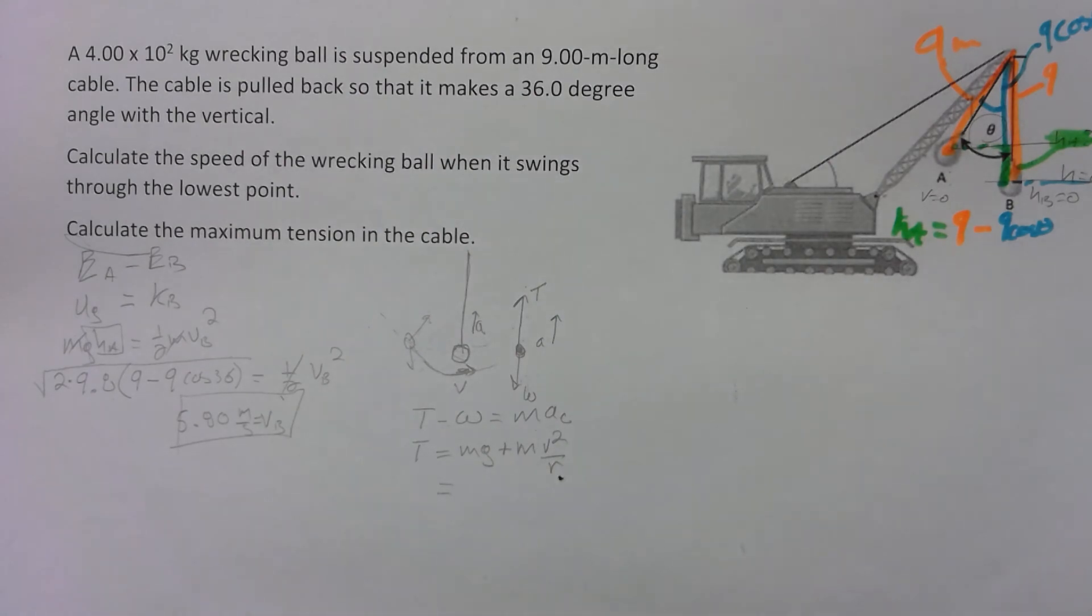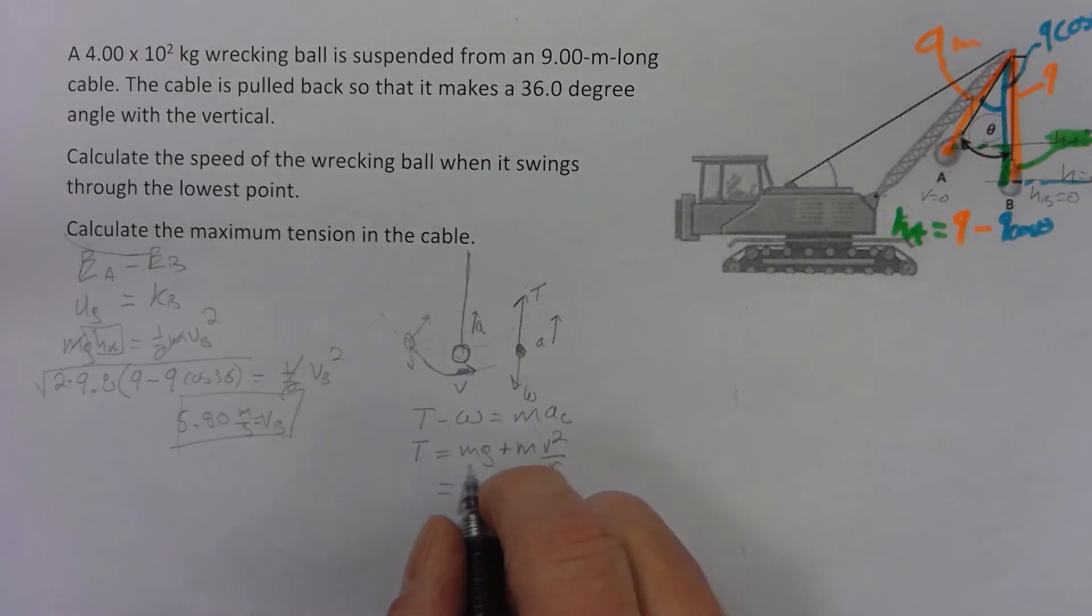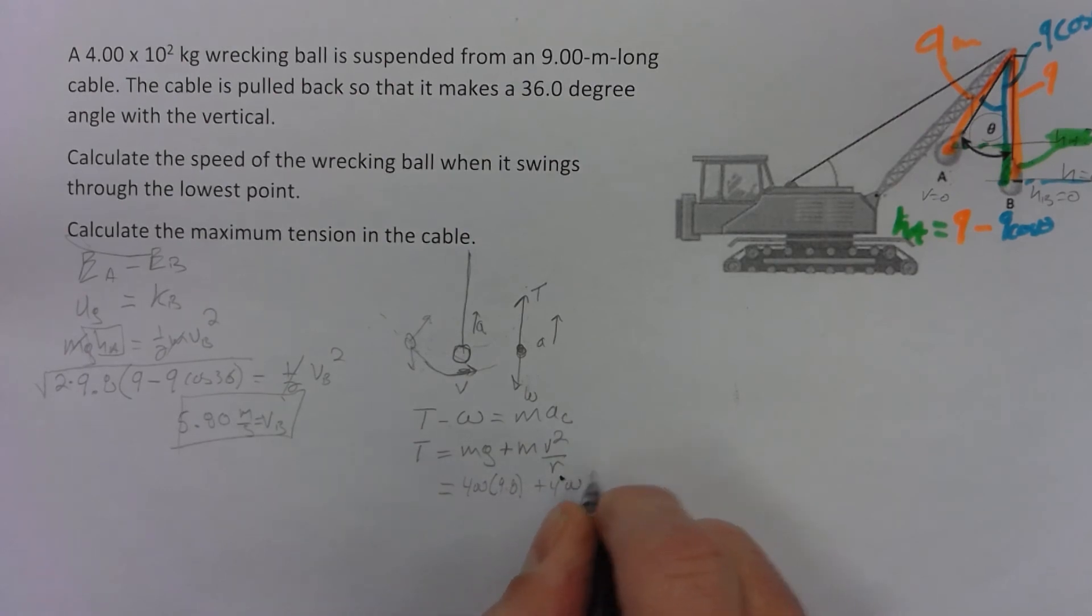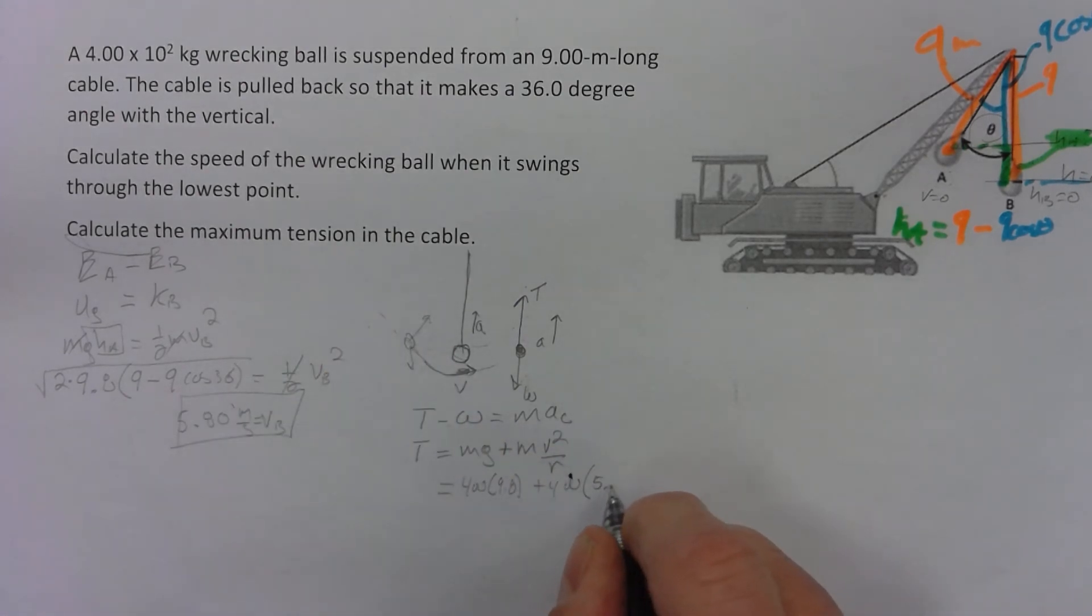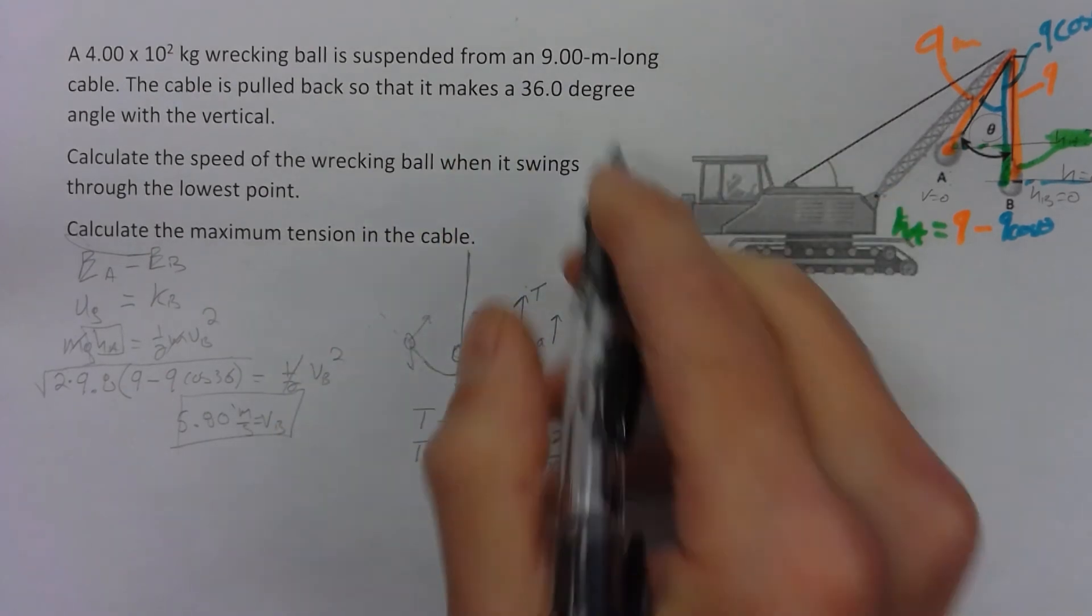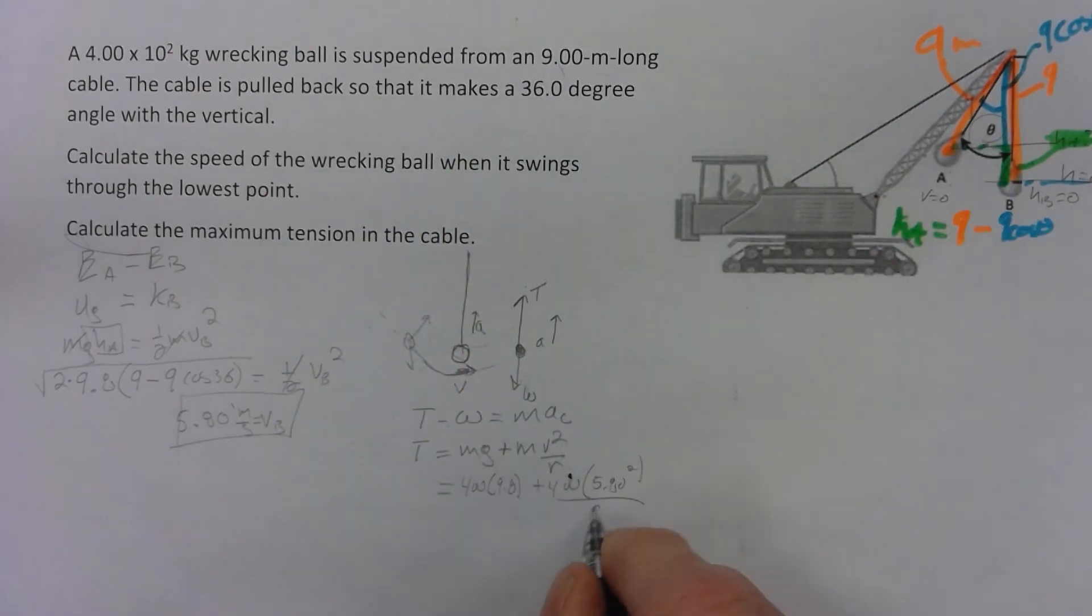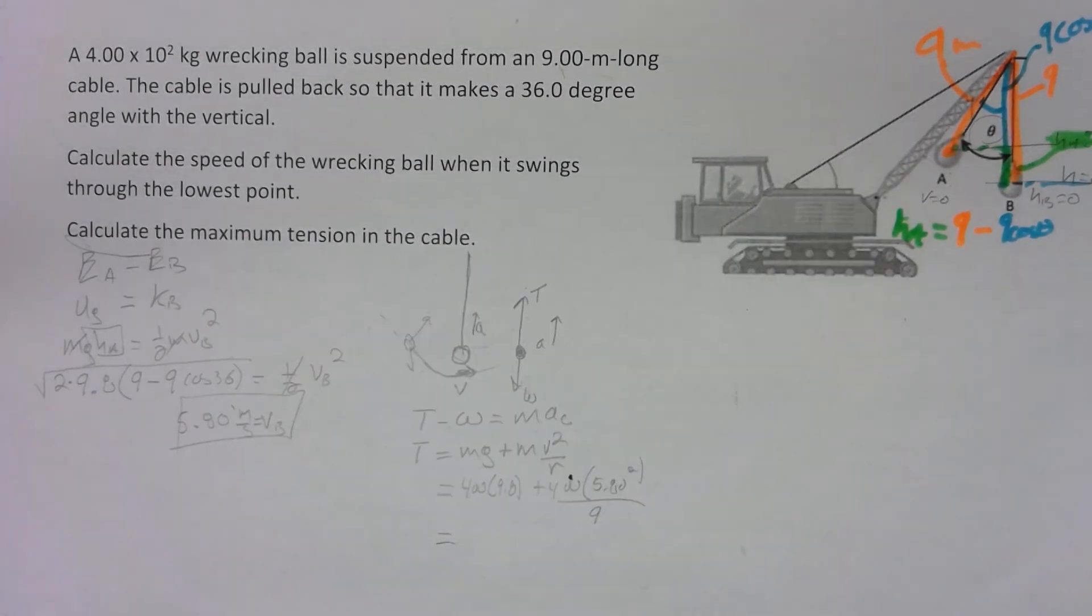Plug those numbers in, right. We got 400, 400 times 9.8, plus 400 times v squared, that over there, the 5.80 squared, divided by the radius. The radius is 9 meters, divided by 9 meters. And so we calculate that out and we get 5,417 newtons.